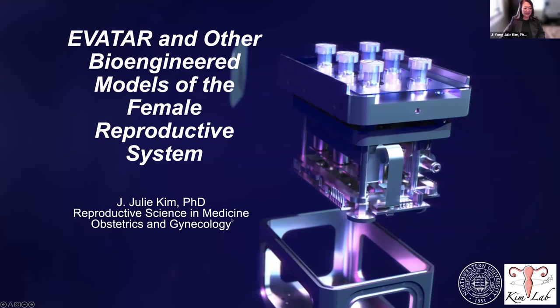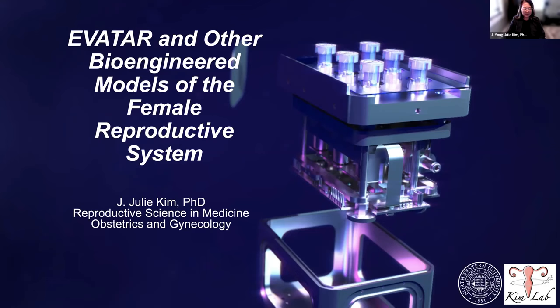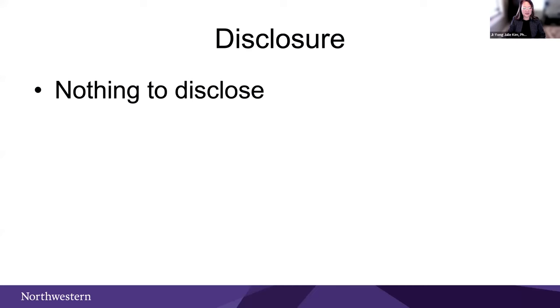She's helped develop physiological models of the female reproductive tract, which can be used to interrogate research questions surrounding fertility and disease and for testing new drugs. She's here today to talk with us about the development and use of some of these modeling systems. The title of today's session is 'Evitar and Other Bioengineered Models of the Female Reproductive System.' Thank you. I will just share my slides now. I really appreciate this invitation to talk about our research — I think this is a great platform for sharing ideas from both the biological and ethical perspectives, as reproduction is a highly discussable subject in the ethics field.